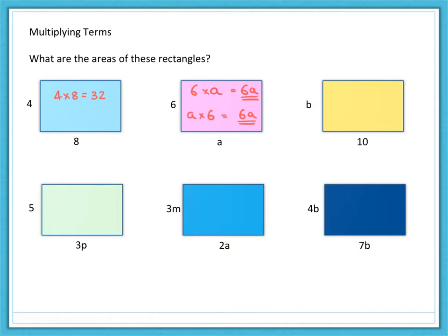Try the next one, the yellow one, yourself. So b multiplied by 10 is 10b. Same as 10 multiplied by b, which is still 10b.